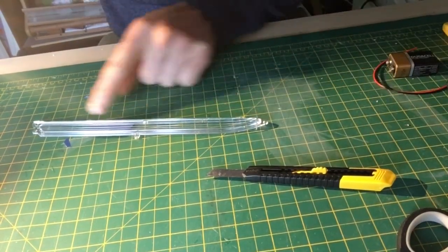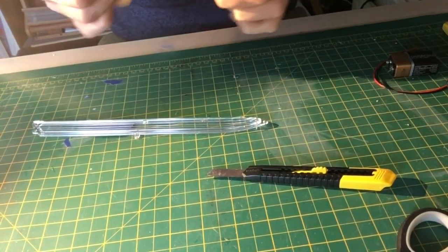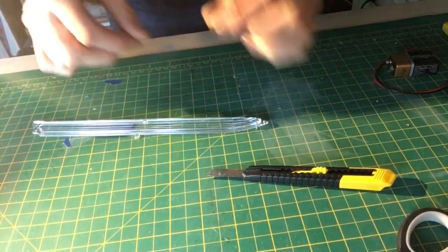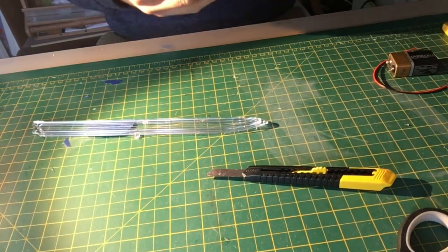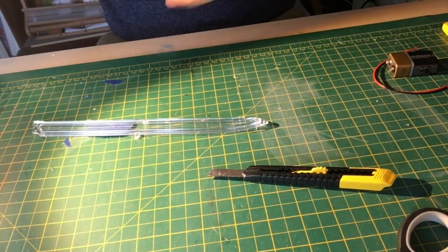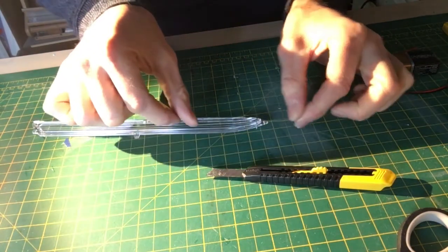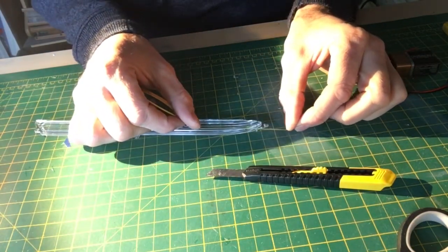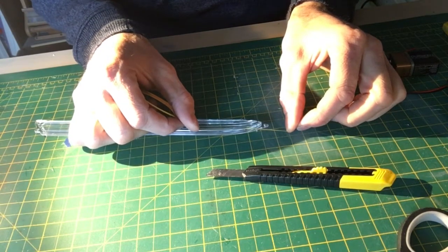I'm going from the pointed end to the other end and I line up, so you can see it's really small. I line up the masking tape with a good amount hanging off and I basically line it onto the groove. Because the grooves, even though they're there, they are quite small.